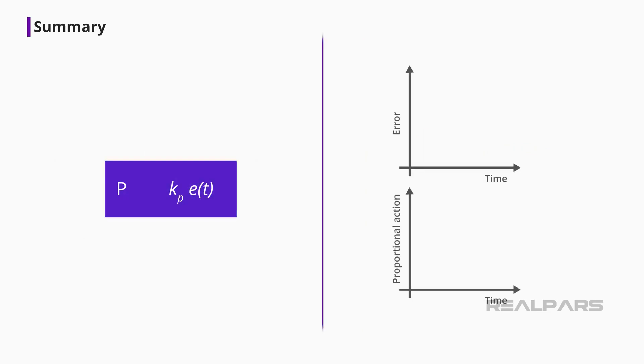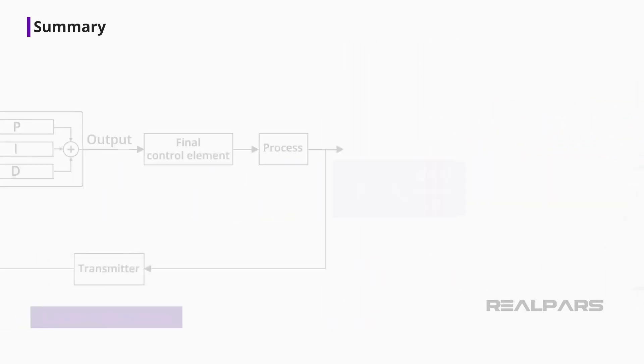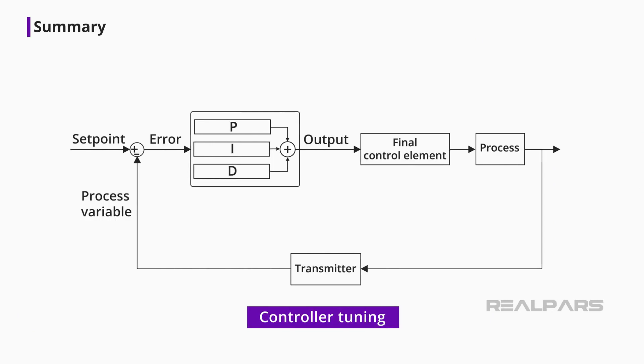The Proportional block creates an output signal proportional to the magnitude of the error signal. The Integral block creates an output proportional to the duration and magnitude of the error signal. The Derivative block creates an output signal proportional to the rate of change of the error signal. Controller Tuning involves correctly setting the controller P, I, and D values for specific process requirements either manually or automatically.